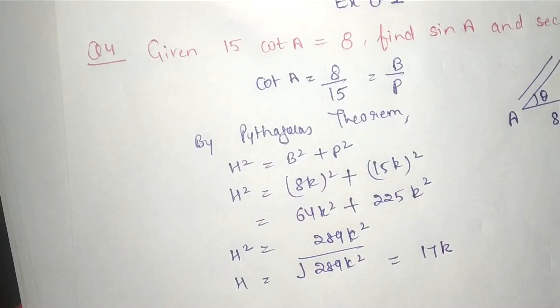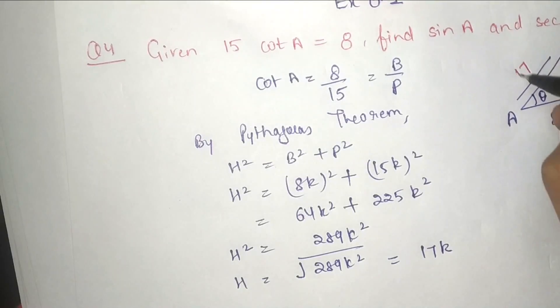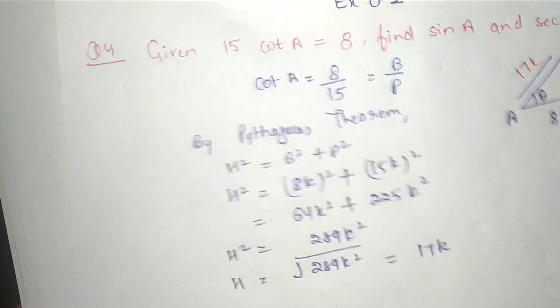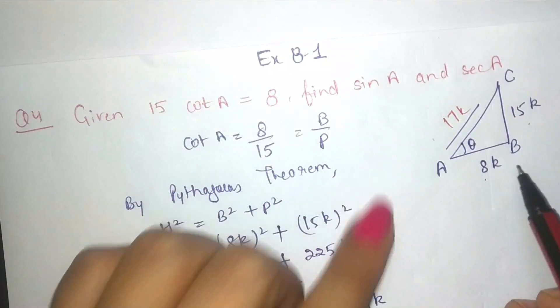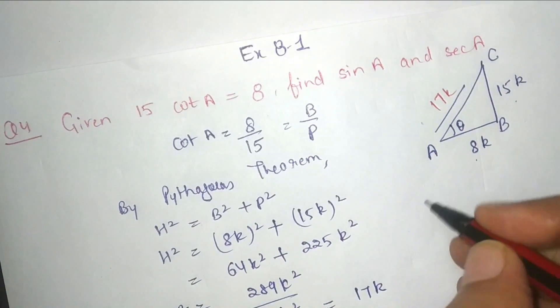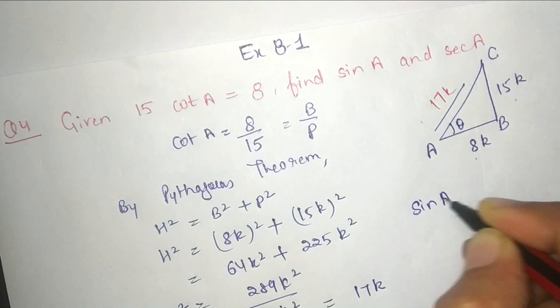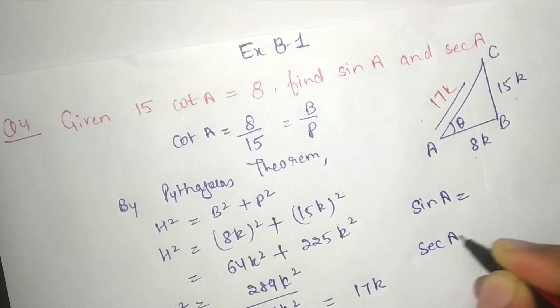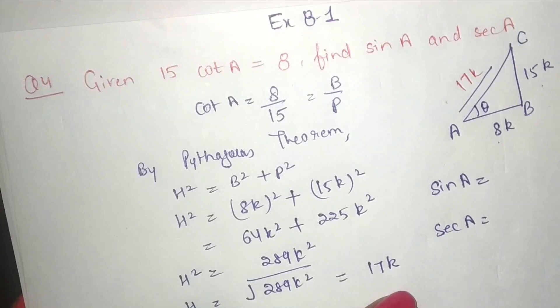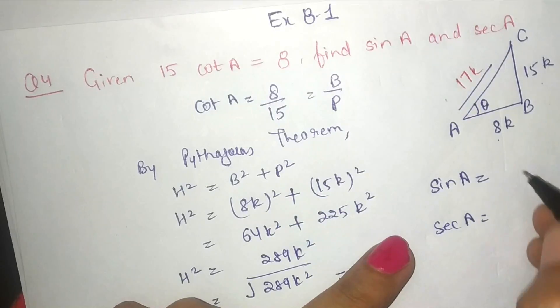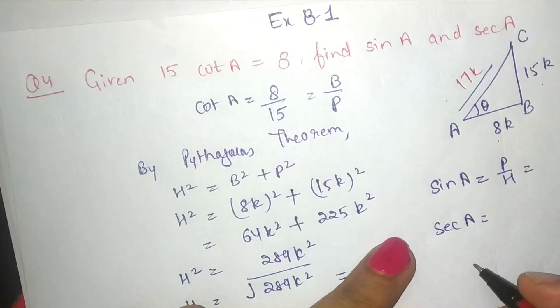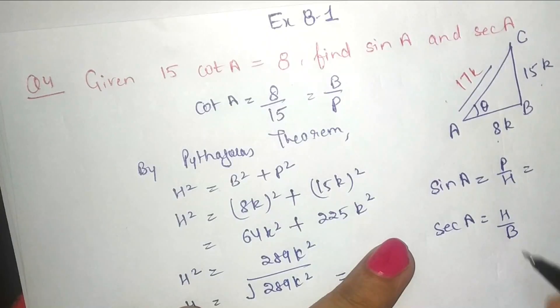So here the value of H is 17k. Now we have base, perpendicular, hypotenuse. We need to find out sin A and sec A. Sin A is P upon H, and sec A is H upon B.